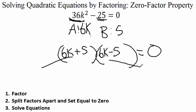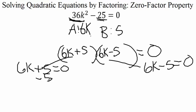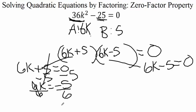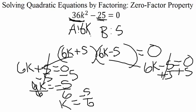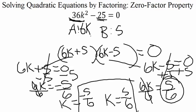Step two: split the factors and set them each equal to zero. So 6k plus 5 equals zero, and 6k minus 5 equals zero. Step three, solve. On the left: subtract 5 from both sides — 5 minus 5 cancels, leaving 6k equals negative 5. Divide by 6, giving k equals negative 5/6. On the right: add 5 to both sides — negative 5 plus 5 cancels, leaving 6k equals 5. Divide by 6, giving k equals 5/6. Our solutions are negative 5/6 and positive 5/6.